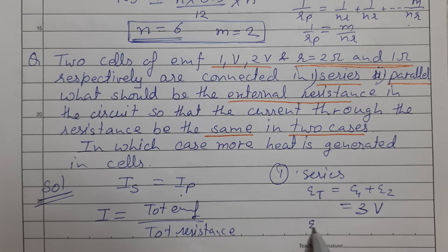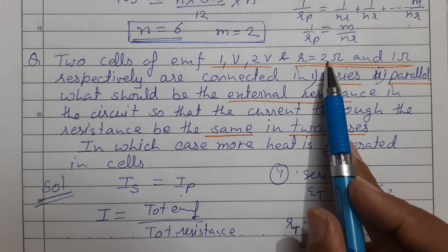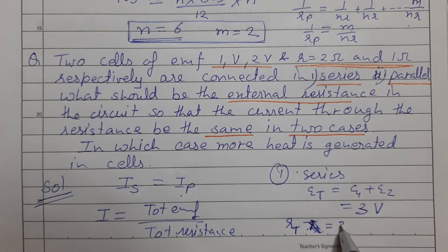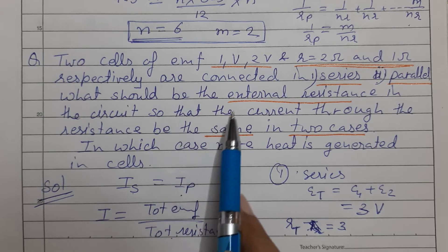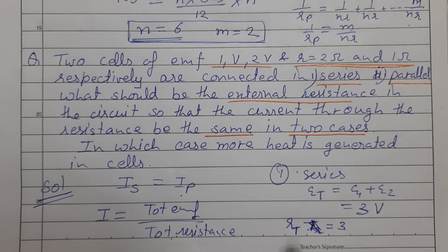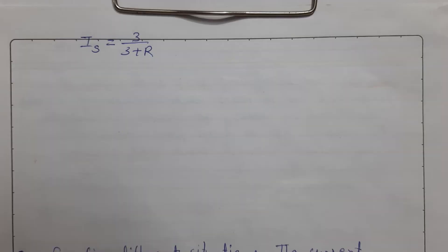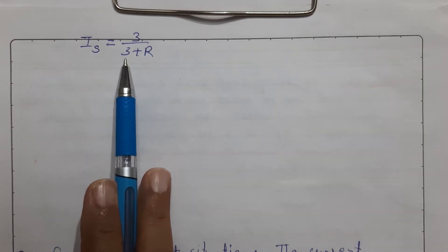For the series case, the total internal resistance is r1 plus r2 equals 2 plus 1 equals 3 ohms. So the current in series is I_S equals 3 divided by (3 plus R).